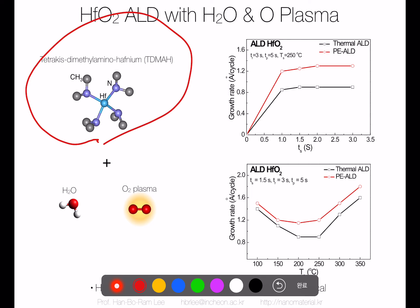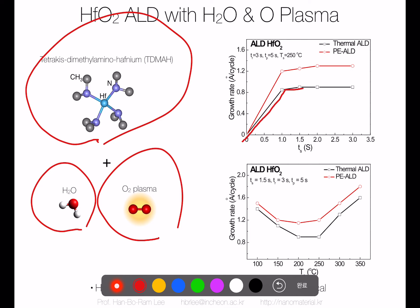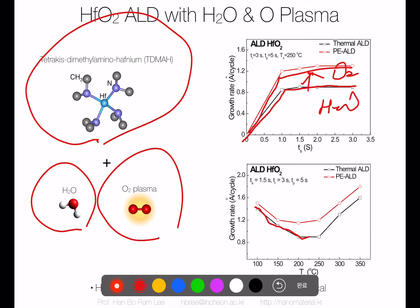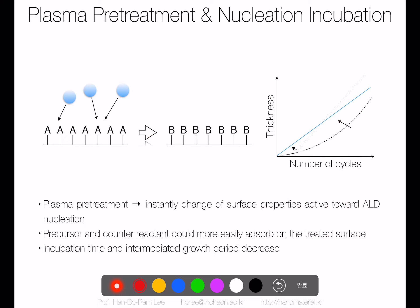For example, using TDMA for hafnium oxide ALD with two different reactants — water and oxygen plasma. The water hafnium oxide ALD process shows a relatively slow growth rate curve, but with oxygen plasma, the curve shifts up to a higher growth rate region. That is the typical example of the plasma counter reactant boosting growth rate.